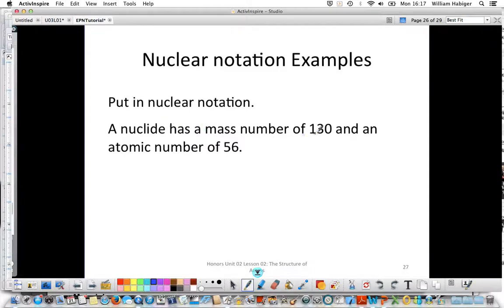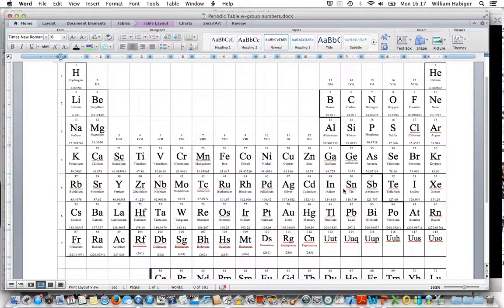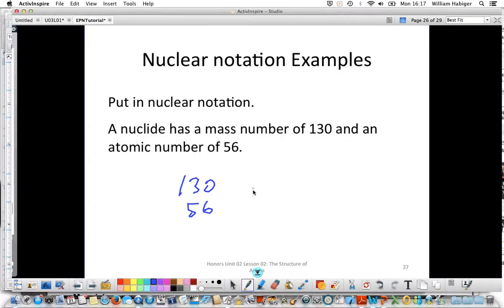So here we have a nuclide that has a mass number 130. So we know what our numbers are. The 130 goes on top. We know the 56 goes on the bottom. That's our atomic number. And then we need to know the symbol of the element. So we have to look on our periodic table, find the element that has an atomic number of 56. It's going to be barium. So the symbol we're going to use for barium is Ba. So we have barium-130.